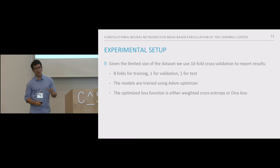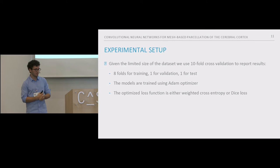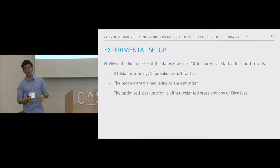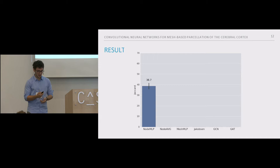Because the dataset is quite small with only 100 subjects, we performed 10-fold cross-validation to obtain more robust results. We split 100 subjects into 10 folds, training with 8, using 1 for validation, and 1 for testing. All models were trained using an Adam optimizer, optimizing either weighted cross-entropy loss or Dice loss, which is more specific to segmentation.